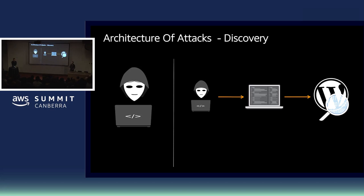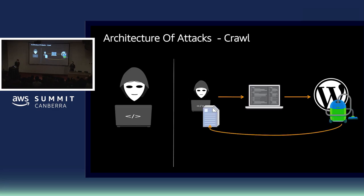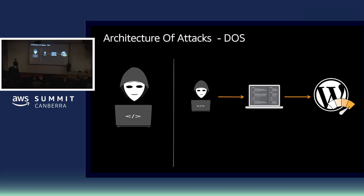Wearing my attacker's hat, the first thing I need to do is perform a little application discovery. I'm looking for breadcrumbs of information — HTTP headers, script engine versions, directory structures, and so on. I'll then crawl and extract as much information as I can, perhaps for a future phishing campaign on their customers. I'll launch some OWASP-style attacks, add a serving of denial of service, and the cherry on top will be a brute force attack.